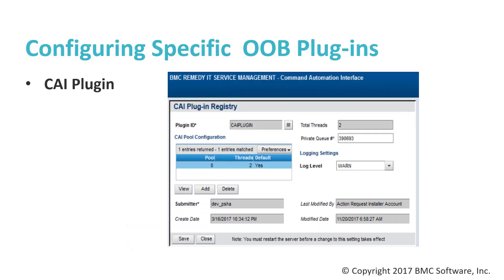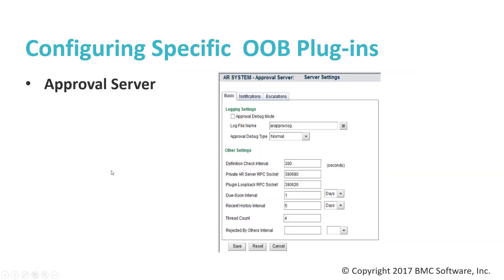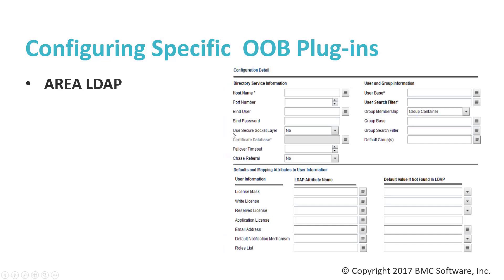Some plugins have their own specific configuration method. For example, the CAI plugin has a CAI plugin registry where you can configure the number of threads, the private queue the plugin uses, and enable logging. The Approval Server has its own configuration under server settings where you can enable logging for the approval plugin and set things like the private socket. ARDBC LDAP and AREA LDAP both provide forms for configuring those plugins. All configuration settings from each of these specific plugin configuration pages are stored in the centralized configuration.